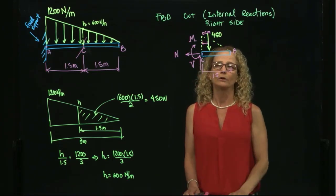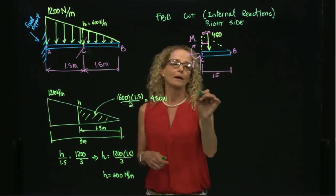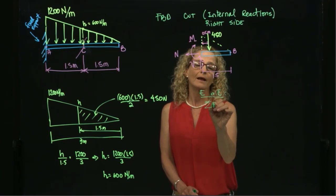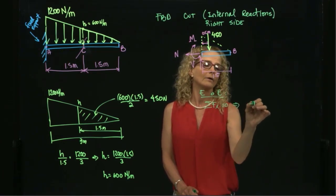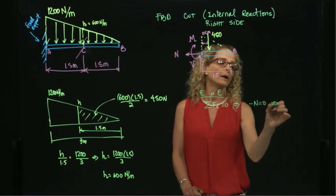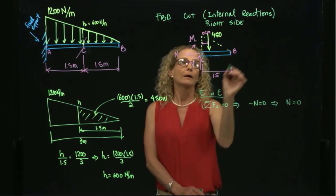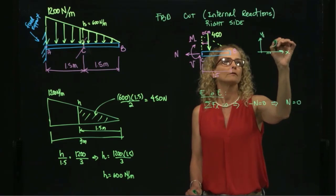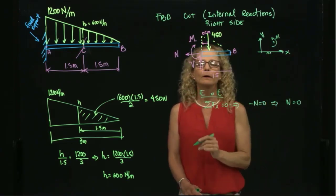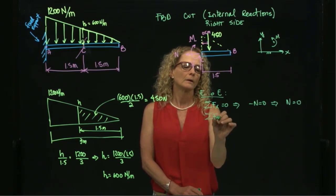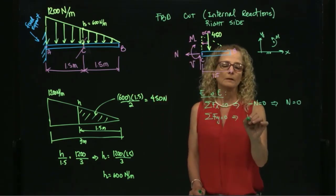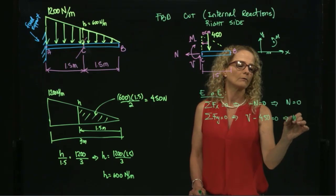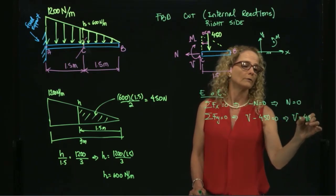Now I can apply the equations of equilibrium. Using x and y as my inertial coordinate system, sum of forces in x equals zero gives negative N equals zero, therefore N equals zero. Sum of forces in y equals zero gives V minus 450 equals zero, therefore V equals positive 450 newtons.